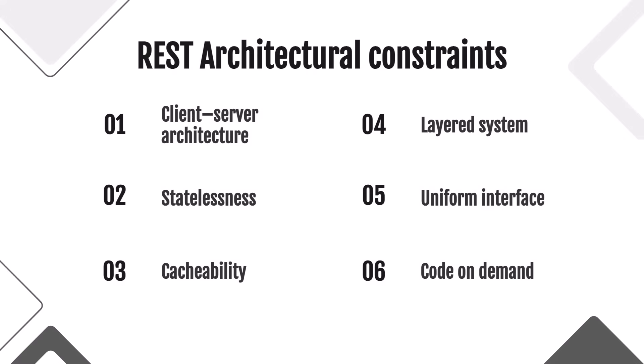The six constraints are: client-server architecture, statelessness, cacheability, use of a layered system, using a uniform interface, and support for code on demand. If the system or API is built according to these principles, it is classified as RESTful.